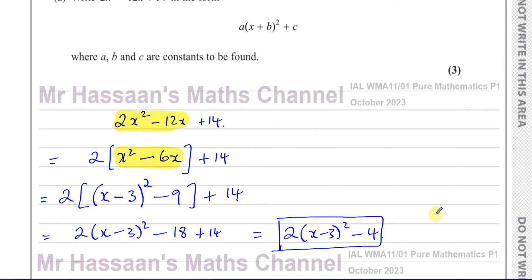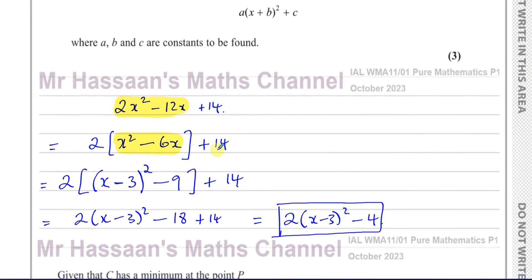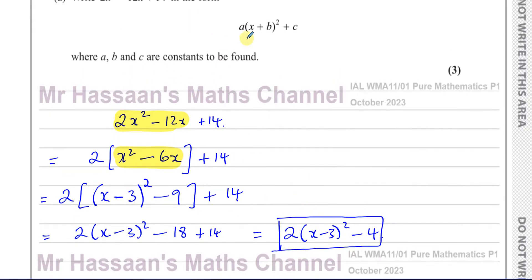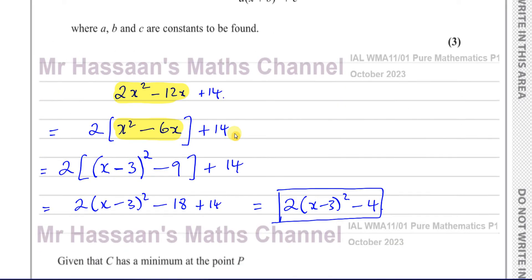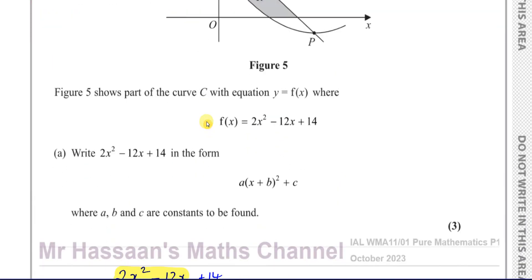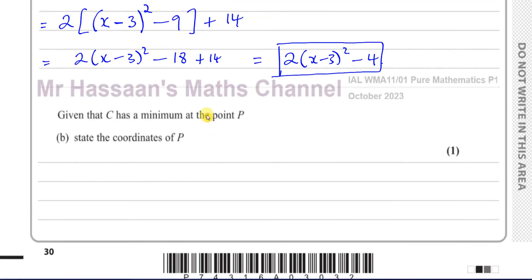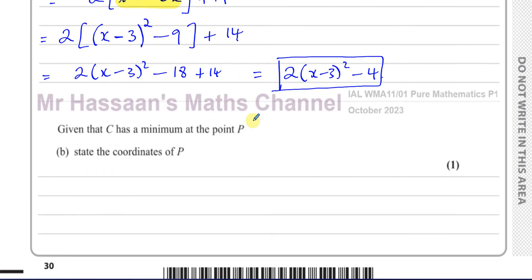So the completed-square form is 2(x minus 3)² minus 4. Here a = 2, b = minus 3, and c = minus 4. They didn't ask us to state the values of a, b, and c separately — they said write it in this form — so we've done that. That's the end of part a, completing the square.